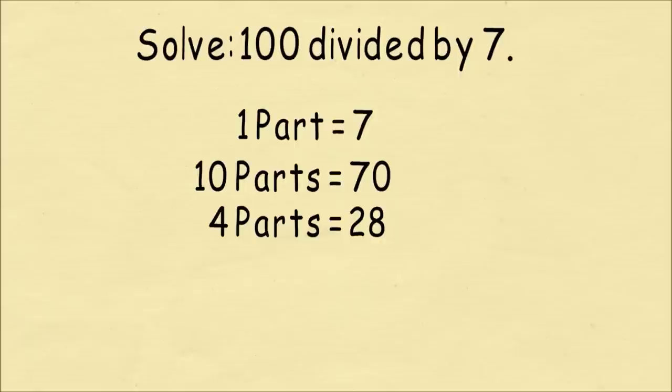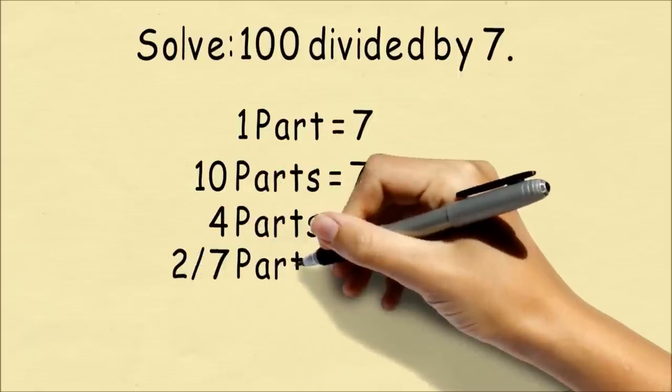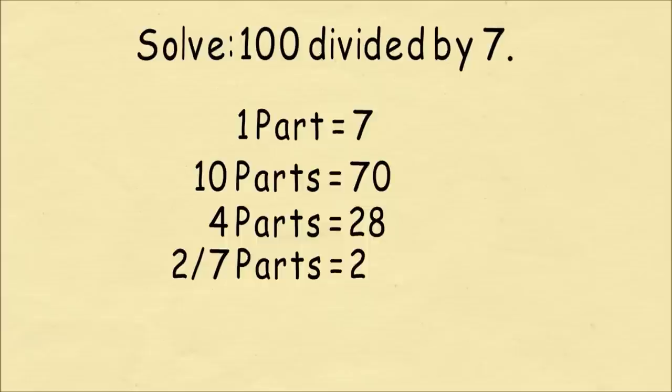We're short by 2 parts, or 2 until we get to 100. So 2 sevenths parts will be equal to 2. So now we've added up multiples until we get to 100. So we have 70 plus 28 plus 2, and that gets us to our 100.